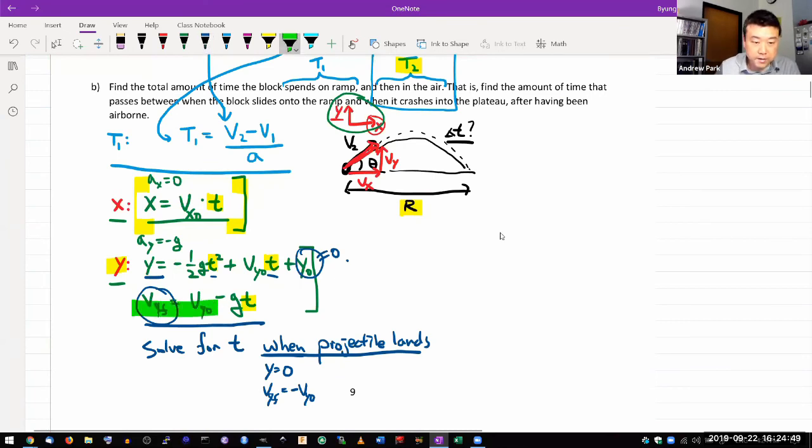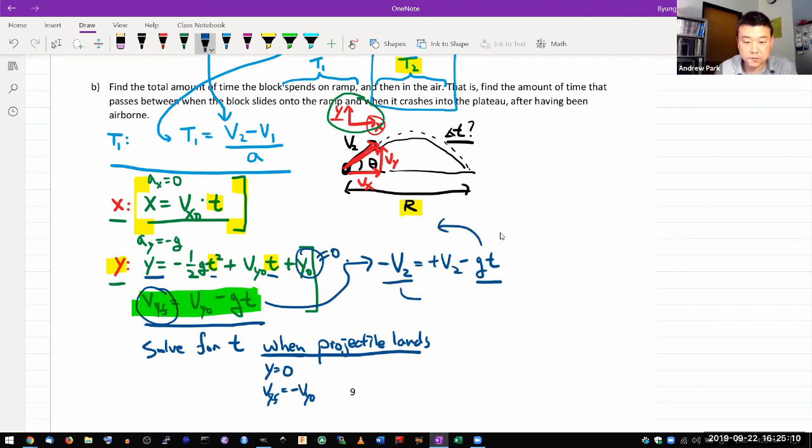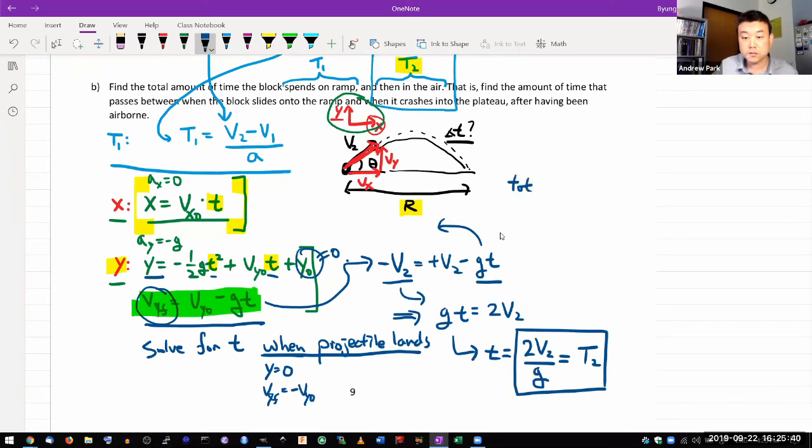I'll use the second equation I wrote down and say that minus V2 is equal to plus V2 minus GT. So I can move this over to the left hand side, move this over to the right hand side. Then I get GT is equal to 2 V2, or time that the projectile spends in air is equal to 2 V2 divided by G, or this is T2. And the total time that the projectile spends in air would be time is T1 plus T2, or the total time that it spends on ramp plus in air.